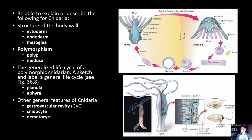The basic cnidarian body wall consists of the ectoderm on the outside, the endoderm or gastrodermis on the inside lining the gastrovascular cavity, and a jelly-like material between the two layers called mesoglia. In diagrams, you can see the ectoderm in blue, the endoderm in yellow, and the mesoglia as the layer between them.